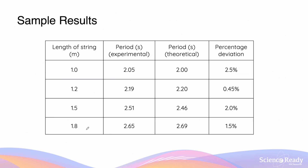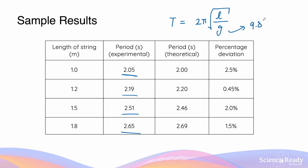Let's go through an example using the pendulum experiment, where I'm measuring the period of oscillation for each length of pendulum string. For one meter, my experimental value is 2.05 seconds. I can calculate the theoretical values using the equation: period equals 2π times the square root of length divided by g, plugging in the string lengths and the accepted value of gravity, 9.81 meters per second squared.